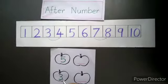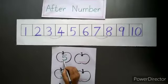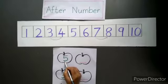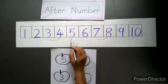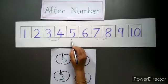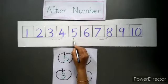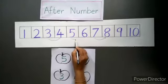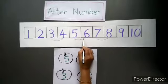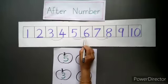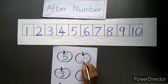Now we will see some more examples. Which number is this? This is number 5. Find out where number 5 is on the number line. And which comes after 5? I am moving forward to get the after number. So after 5, it is number 6.